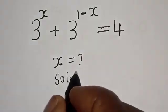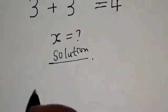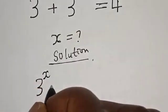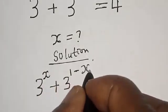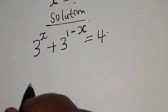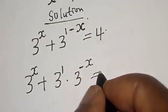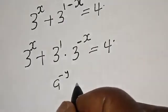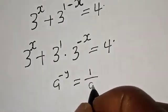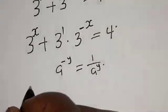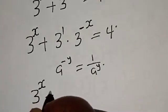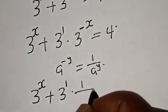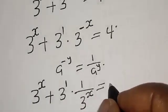Solution. We have the given equation: 3 raised to power x plus 3 raised to power 1 minus x is equal to 4. We rewrite this as 3 raised to power x plus 3 raised to power 1 multiplied by 3 raised to power minus x, which equals 3 raised to power x plus 3 times 1 over 3 raised to power x, equal to 4.